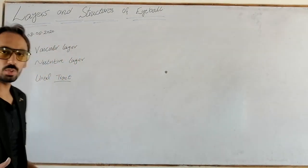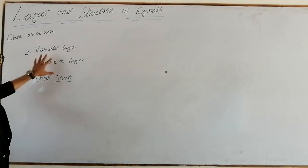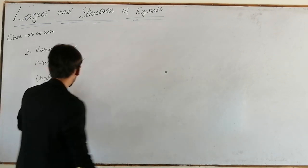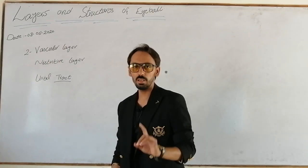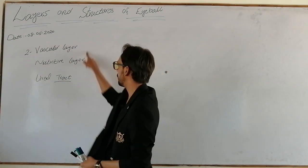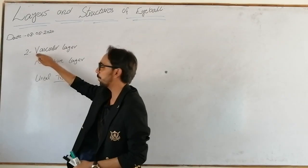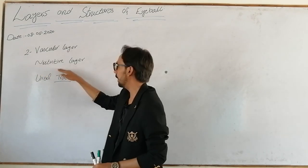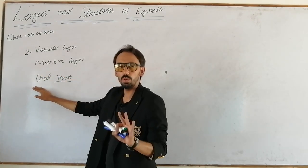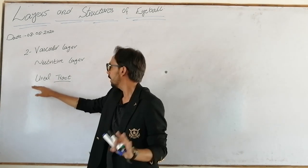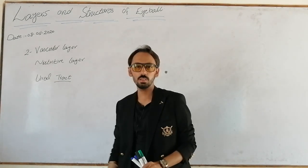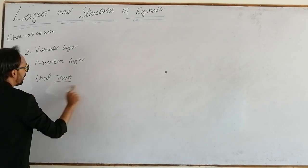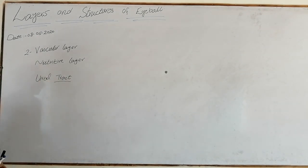We will discuss the second coat of the eyeball — the second layer called the vascular layer. This vascular layer has three different names. The first name is vascular layer, the second name is uveal layer, and the most well-renowned name — the most important name — is uveal tract.